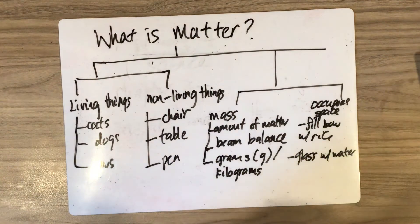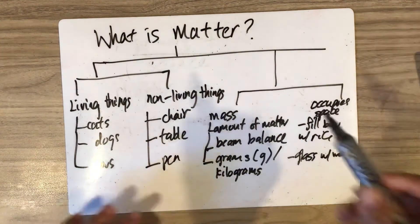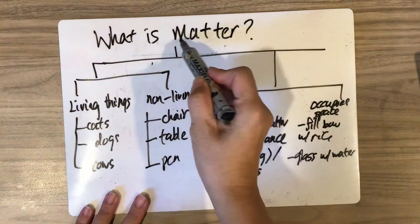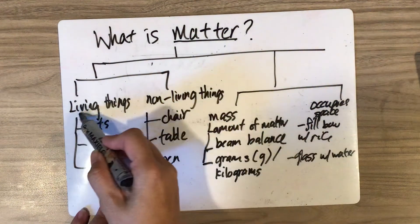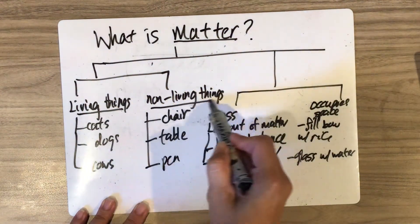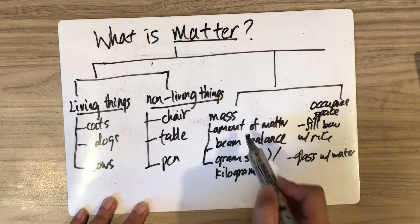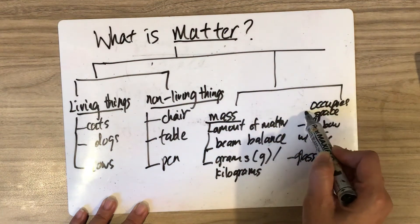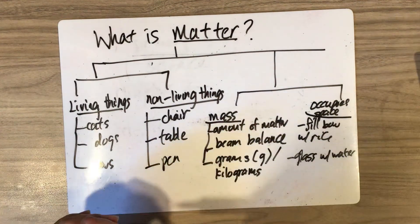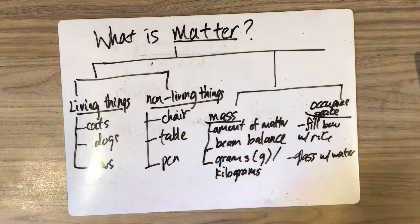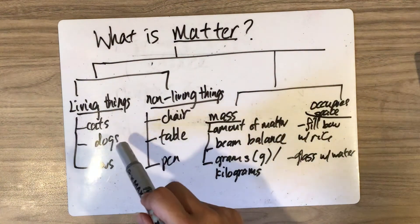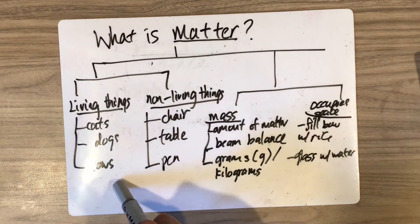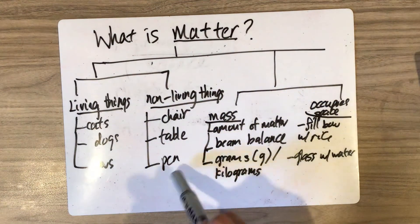The important keywords you must know for this section: matter, living things, non-living things, mass, occupies space. You need to know how to give examples: cats, dogs, cows, chair, table, pen.